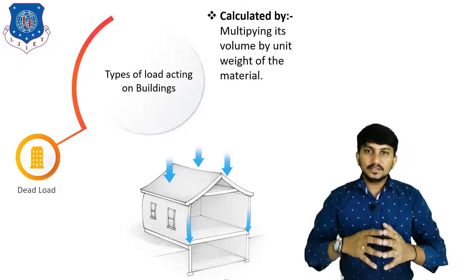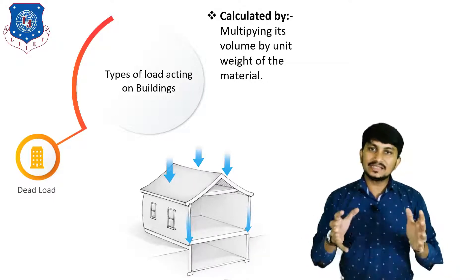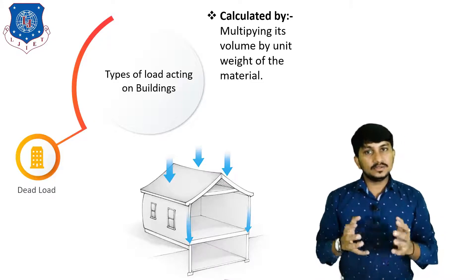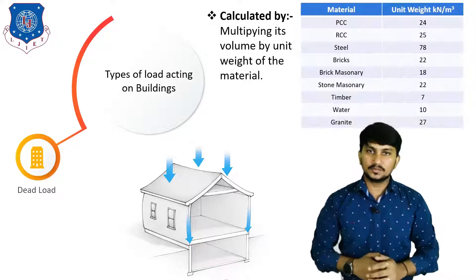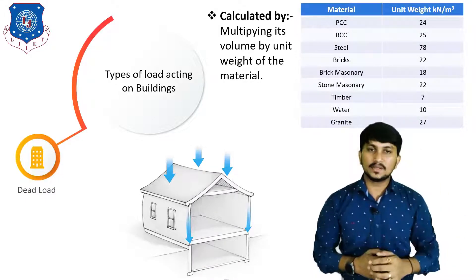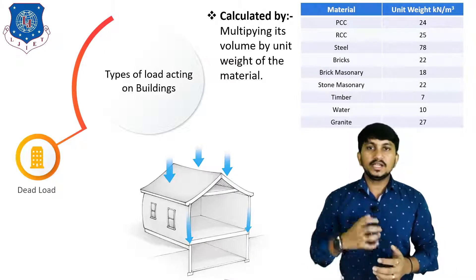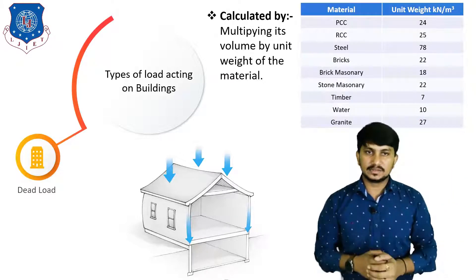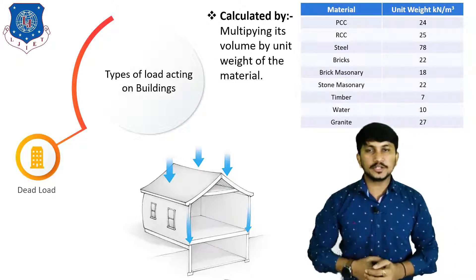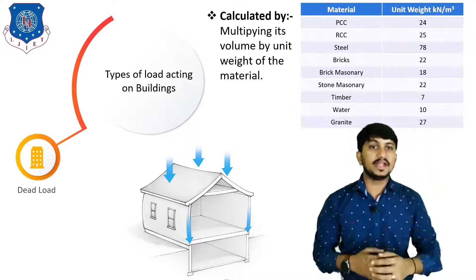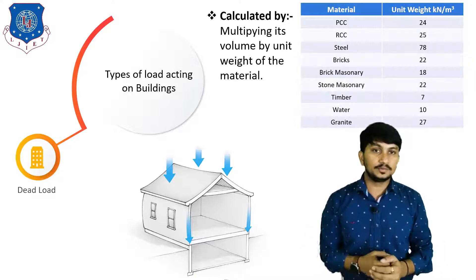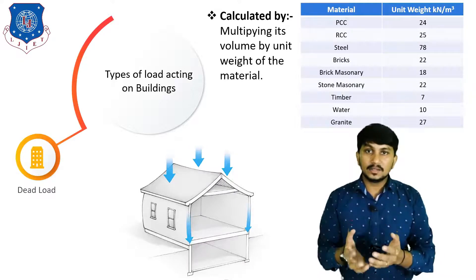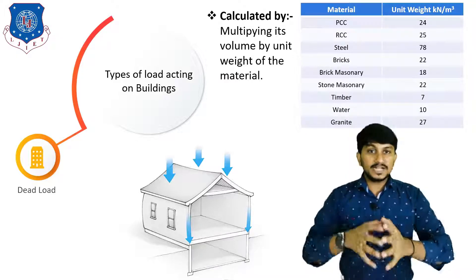Dead load is calculated by multiplying the volume of the component by the density of the component. For density, we refer to Indian standard code IS 875 Part 1. This code has a table showing density of various materials: PCC has a density of 24 kN/m³, RCC has 25 kN/m³, steel has 78 kN/m³, bricks have 22 kN/m³, and so on. By adding the self-weight of each component, we can find out the dead load of the building.